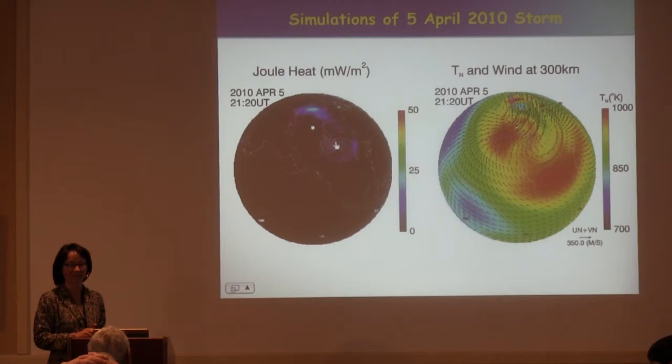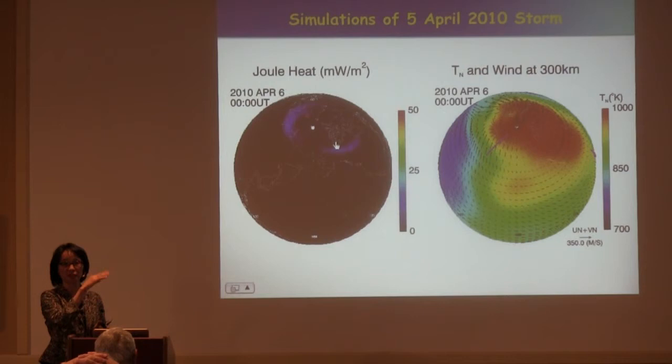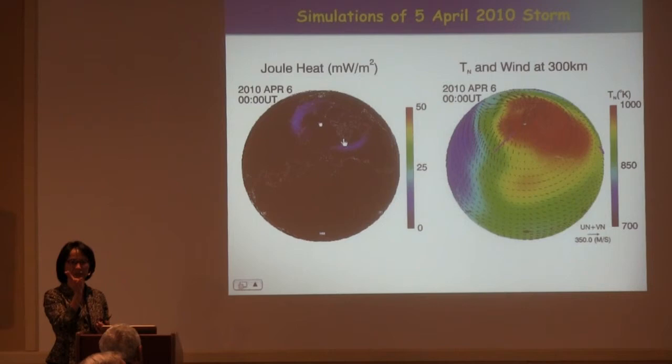[Q&A] Question: When you combined SAMI3 with TIEGCM and showed fluxes at 680 kilometers, were they vertical fluxes or field-aligned? Answer: These are vertical fluxes — I just converted to vertical. They have a field-aligned component off the equator, so these are two components perpendicular and along the field lines, projected to the vertical direction. At the equator, those fluxes are mostly E×B drift.